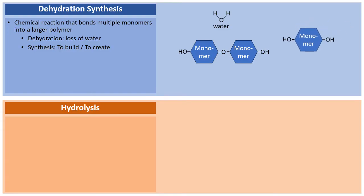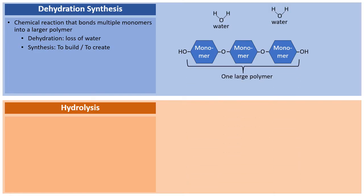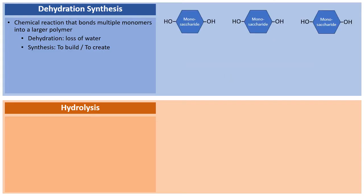Bringing in the third monomer: again it's a dehydration reaction because two H's and an O are highlighted, forming water. A water molecule is removed and all three monomers have been bonded together to make one larger polymer. That's a dehydration synthesis reaction.